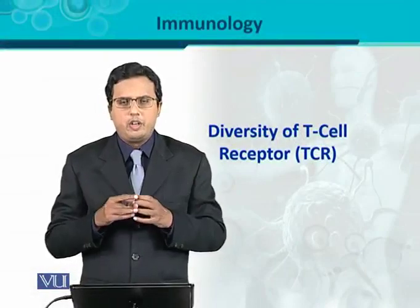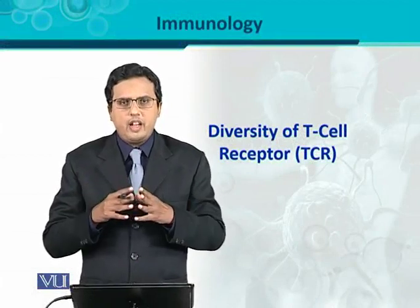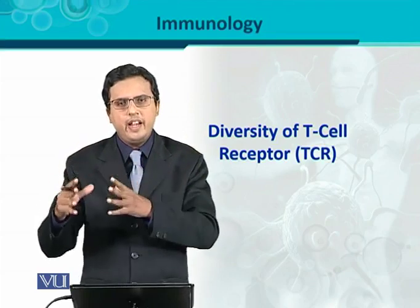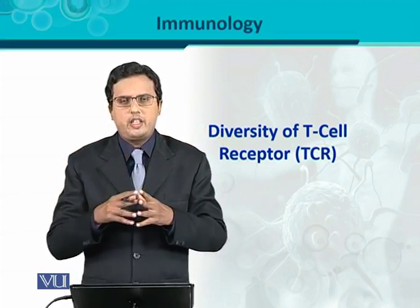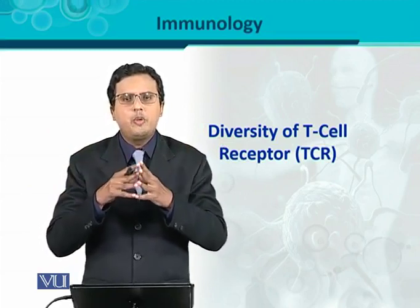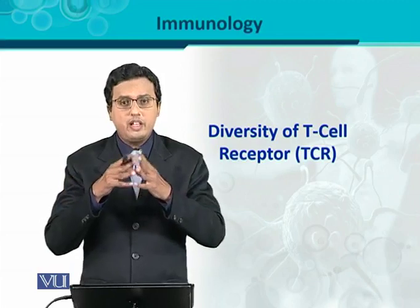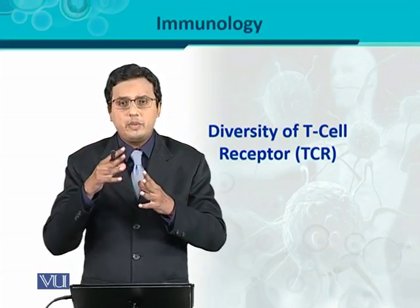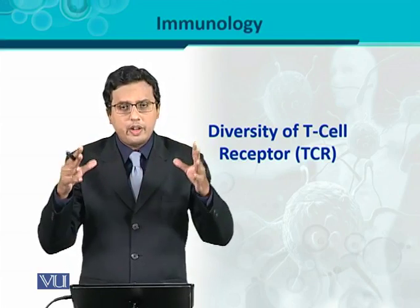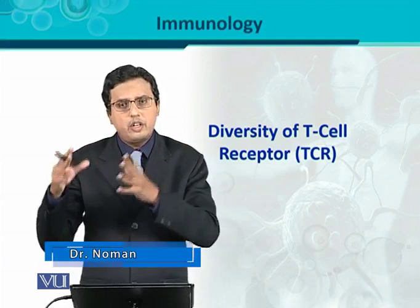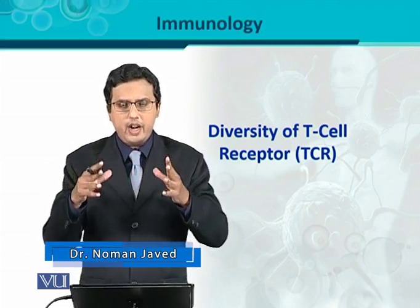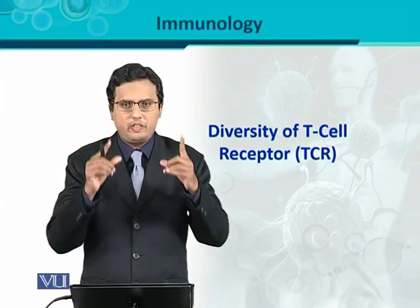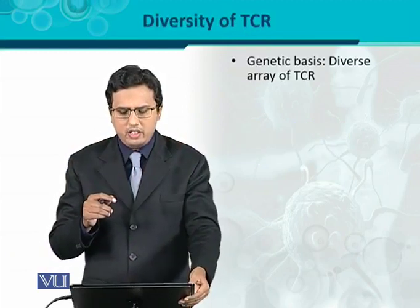Diversity of T-cell receptor, or TCR. Diversity means how many repertoires of the TCR are available for binding to a variety of antigens. Like we saw in the case of immunoglobulin, which is received on the B-cell surface as a BCR or B-cell receptor, it has its own diversity — every B-cell receptor is specific for a certain kind of antigen. Similarly, TCR has diversity, meaning that for a single antigen, there is a single specificity of the TCR.